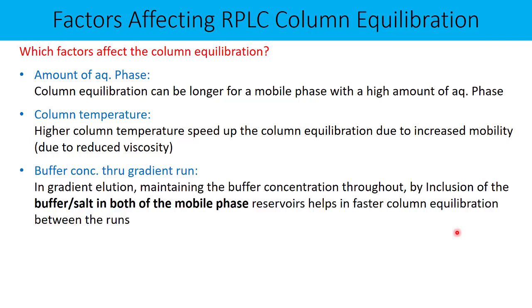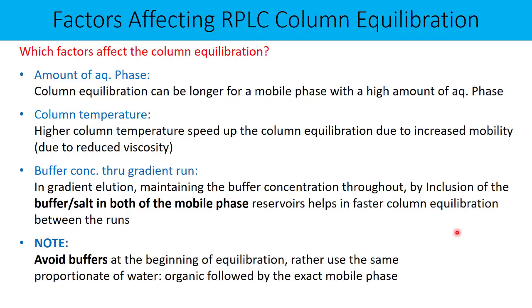Buffer concentration throughout the gradient run is another consideration. In gradient elution, maintaining the buffer concentration throughout the entire run by including the buffer or salt in both mobile phase reservoirs helps in faster column equilibration between runs. Your baseline will be more stable if you add buffer in both reservoirs of your gradient mobile phases. An important note: if you have buffers as part of your mobile phase, don't begin column equilibration using the exact mobile phase. Instead, use the same proportionate of water and organic solvent for some time, followed by the exact mobile phase. This process will reduce your column equilibration time.